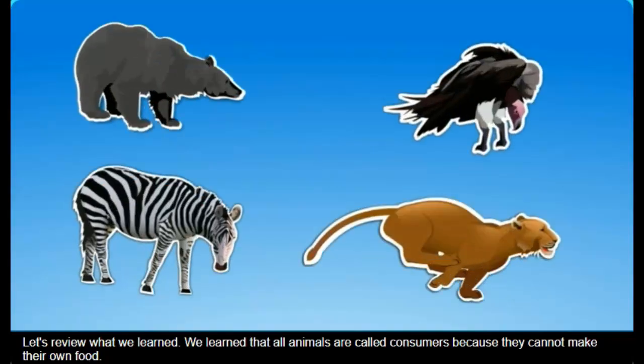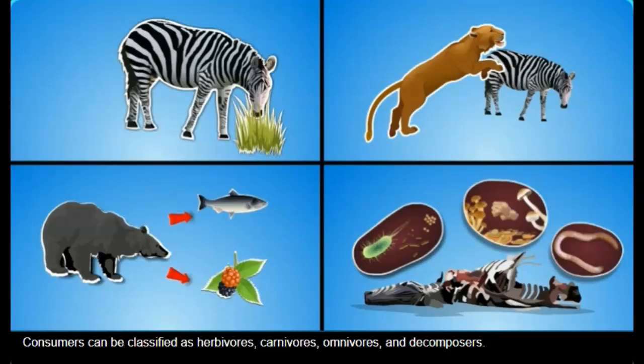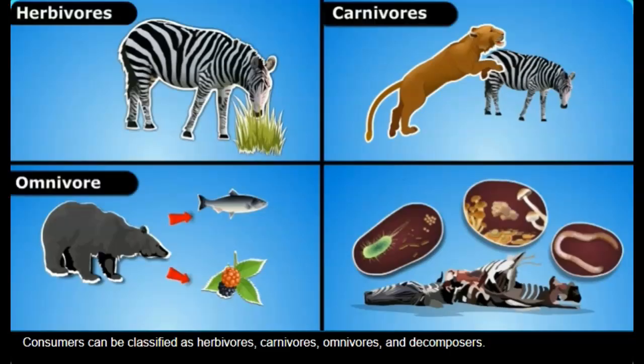Let's review what we learned. We learned that all animals are called consumers because they cannot make their own food. Consumers can be classified as herbivores, carnivores, omnivores, and decomposers.